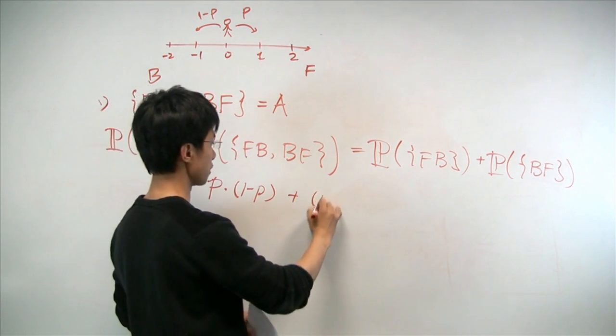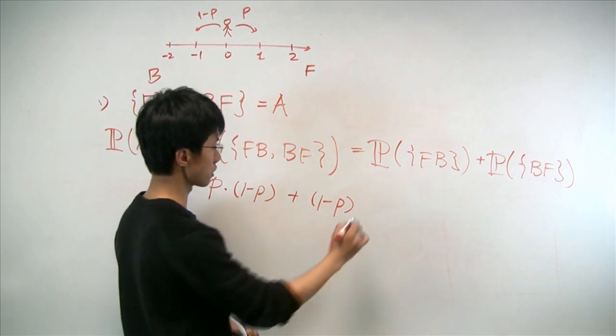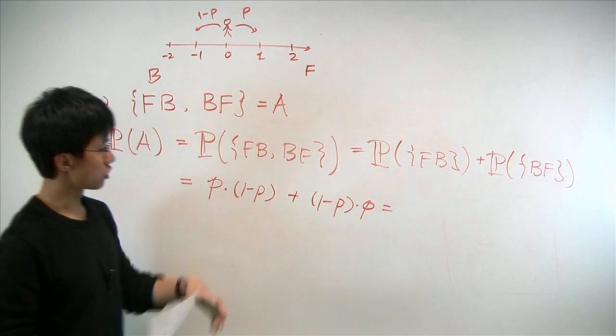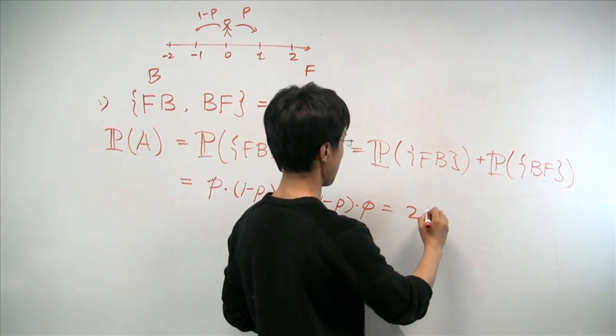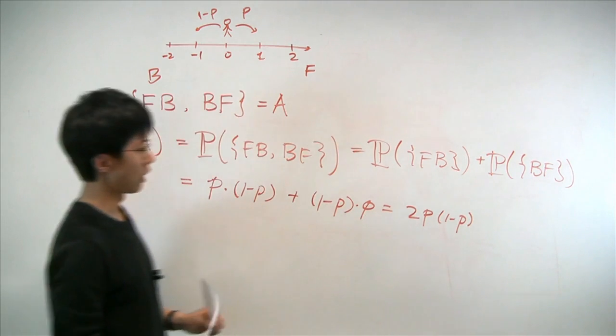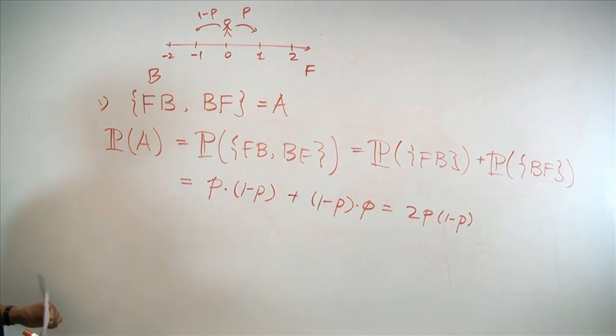And similarly, for the second one, we have going backwards first times going forward the second time. Adding these two up, we have 2 times p times 1 minus p. And that will be the answer to the first part of the problem.